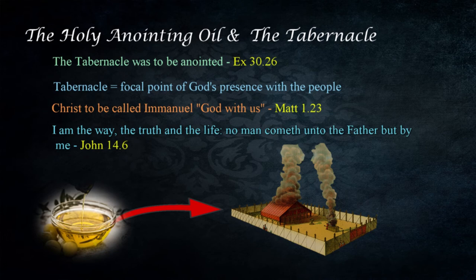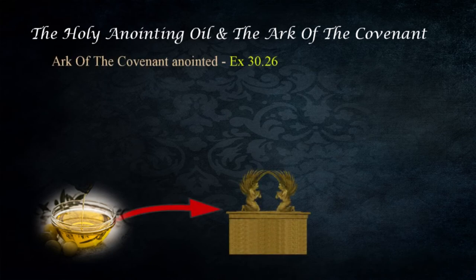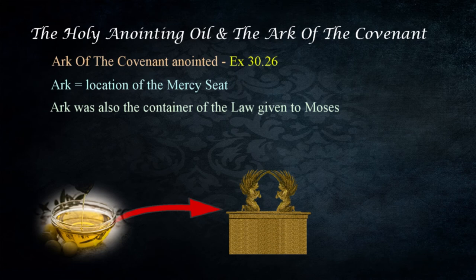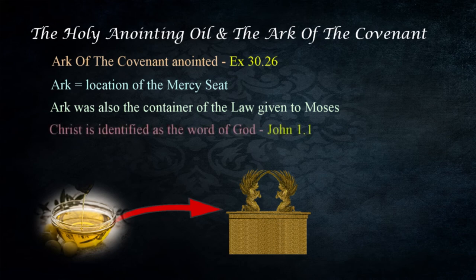The ark of the covenant was also anointed with the holy anointing oil in Exodus 30:26. The ark was the location of the mercy seat where God manifested his presence on the Day of Atonement and set the sins of the people aside for a year. The ark itself was the container of the law given to Moses, representing the authority of God. A pot of manna was later placed in the ark as a reminder of how God fed the people, as well as the rod of Aaron that budded, representing the delegation of authority through the priesthood of Aaron.